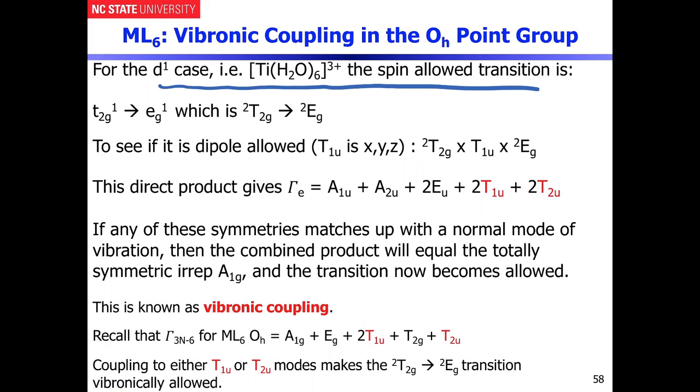If you remember the Tanabe-Sugano diagram for this, the spin allowed transition is a doublet T2G to a doublet EG. The way that you can immediately tell that this transition is electric dipole forbidden is based on the Laporte rule, just to begin with, because you can't have transitions from G to G. That tells you immediately that the transition is going to be forbidden.